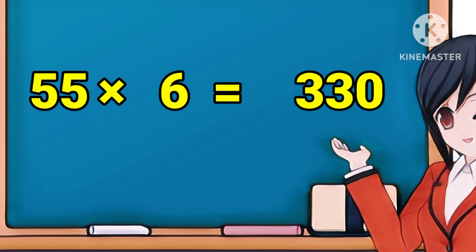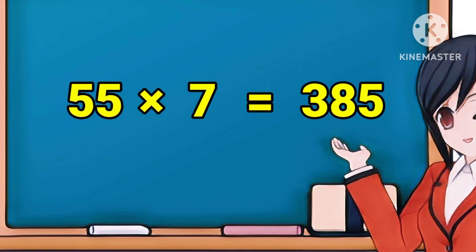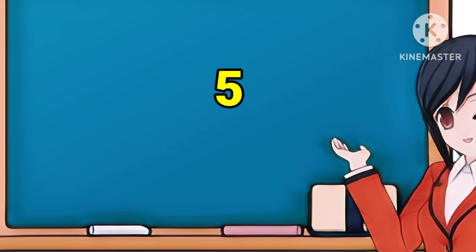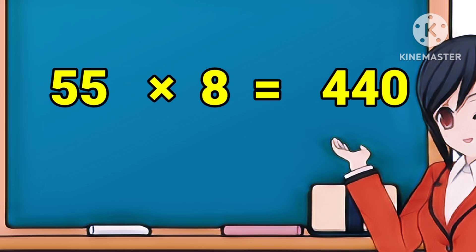55 × 5 = 275. 55 five are 275. 55 × 6 = 330. 55 six are 330.